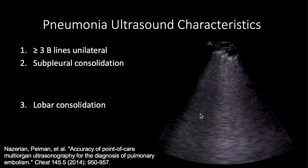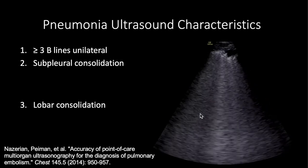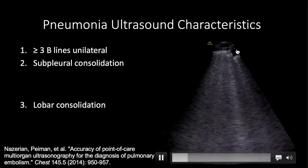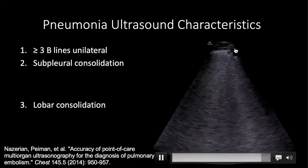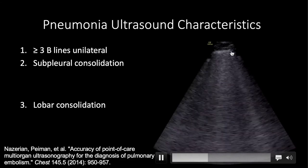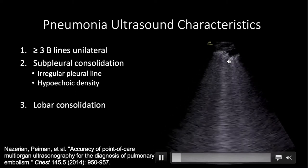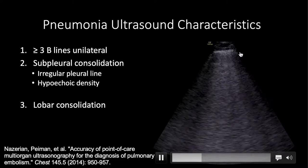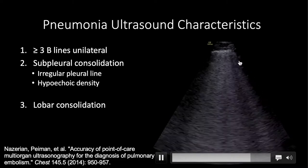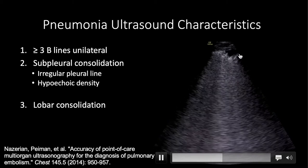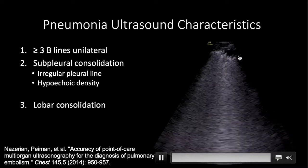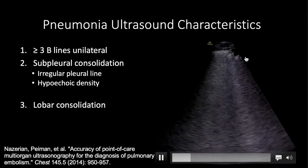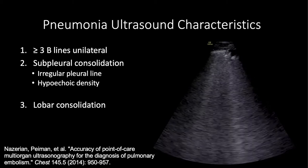Let's talk about subpleural consolidation, which increases our specificity for pneumonia. Normally your pleural line is white and goes across the screen, but here the pleural line is interrupted — there's a hypoechoic or black spot up against the pleura. This irregular pleural line and hypodensity is due to pus starting to fill the lung, making it behave more like a solid organ, with B-lines arising from it. This doesn't happen with CHF — it's an inflammatory infiltration.